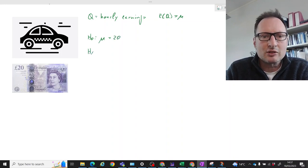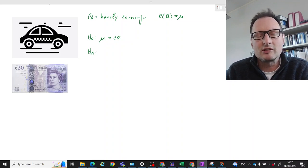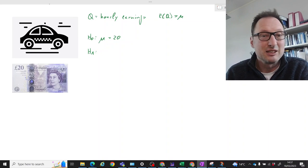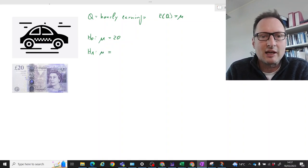As he is concerned about those earnings either being too low because his drivers will leave, or too high meaning he isn't charging enough, the alternative hypothesis is that mu is unequal to 20.